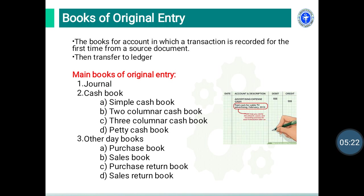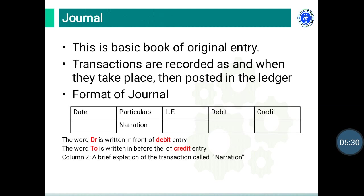Today we start with the first type of book of original entry, that is the journal. Journal is the book of original entry where transactions are recorded as and when they take place. The transactions from this book are then posted to the ledger.